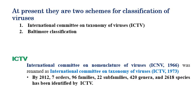At present, there are two schemes of classification for viruses. The first is the International Committee on Taxonomy of Viruses (ICTV), and the second is the Baltimore classification. These are the two systems currently followed for naming and classifying viruses.